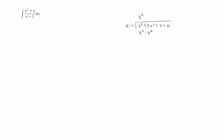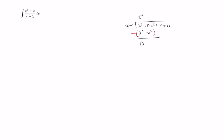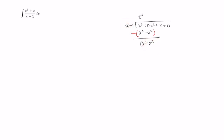Just as you would for normal long division, at this point we want to subtract this expression from this expression. X cubed minus x cubed is zero. Zero x squared minus a negative x squared becomes zero x squared plus x squared, which is just x squared. Next, just like you would for usual long division, you want to take this x and bring it down, so let's write in plus x.